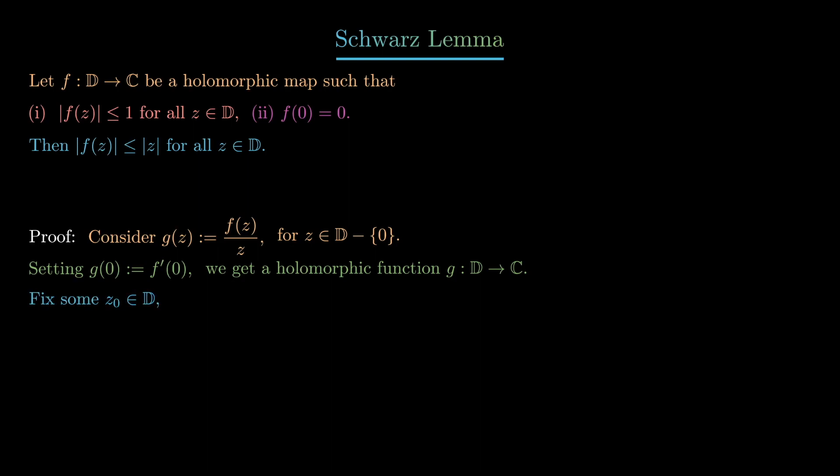Now we'll fix some z0 in the unit disk and choose r such that r is greater than the absolute value of z0 but is less than 1.